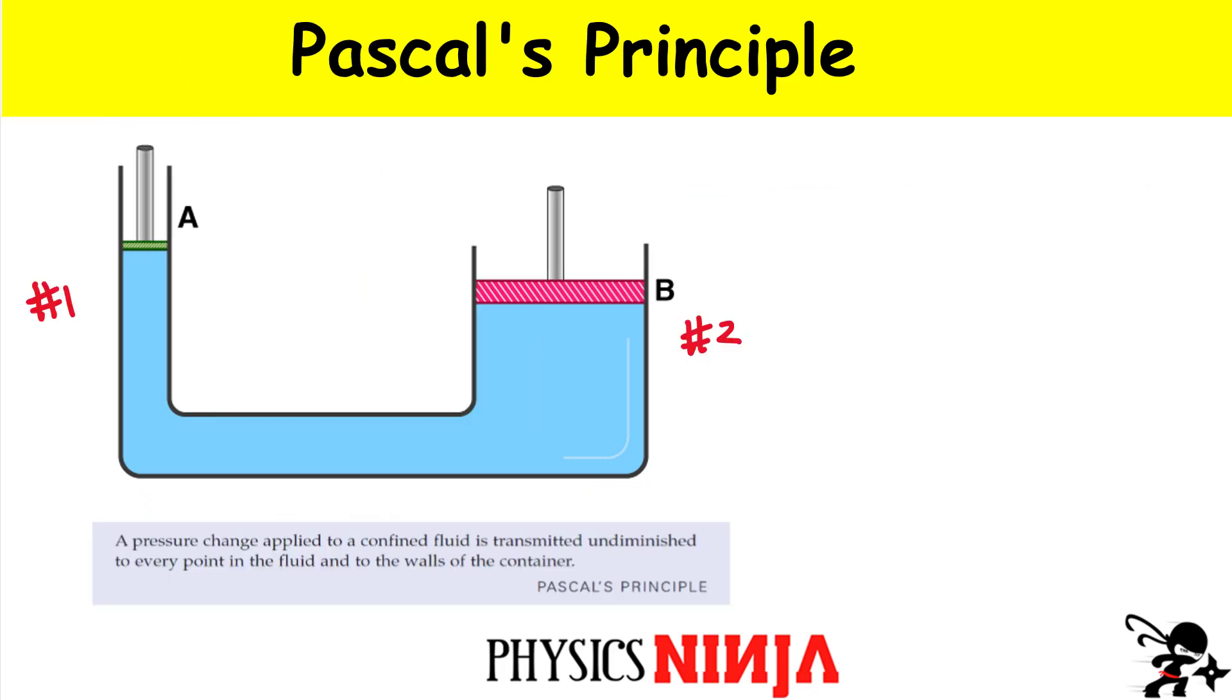First let's define what Pascal's Principle is. Pascal's Principle basically says that if you have a pressure change applied to a contained fluid, like the one I have shown here, it's contained by both of these pistons, a small one on the left and a bigger one on the right-hand side, that pressure change is transmitted undiminished at every point in the fluid and also to the walls of the container.